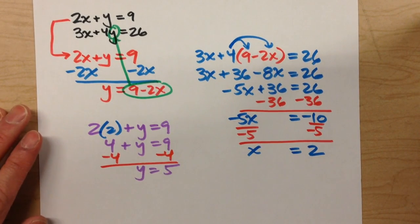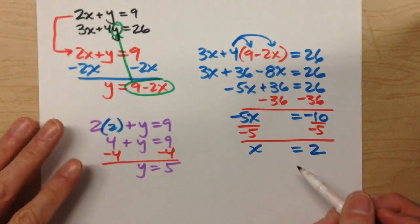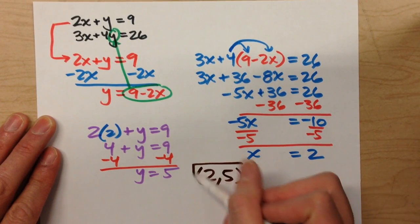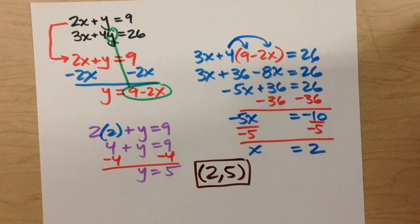So now I know my solution to my system of equations. It's x is 2, y is 5. Done.